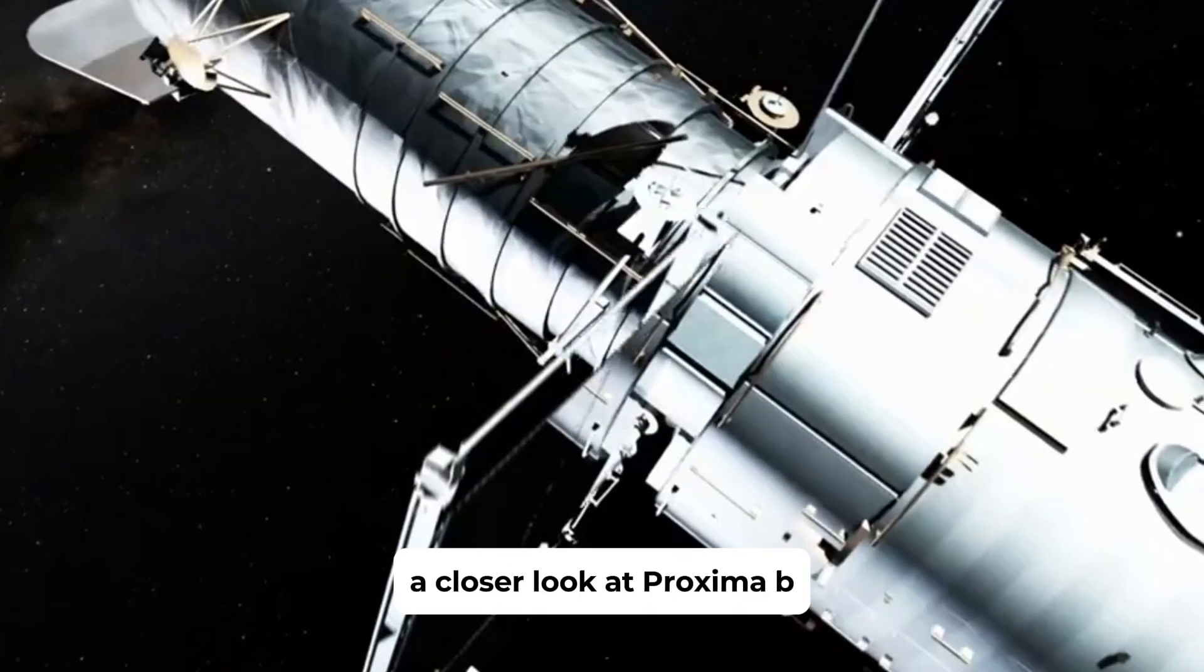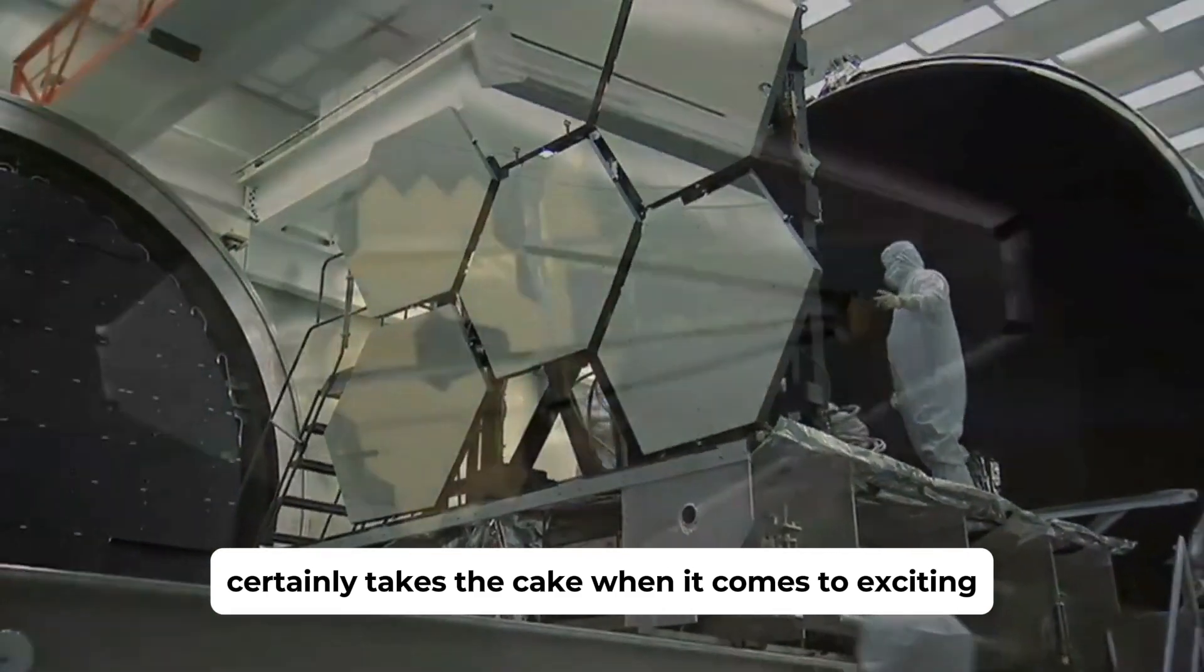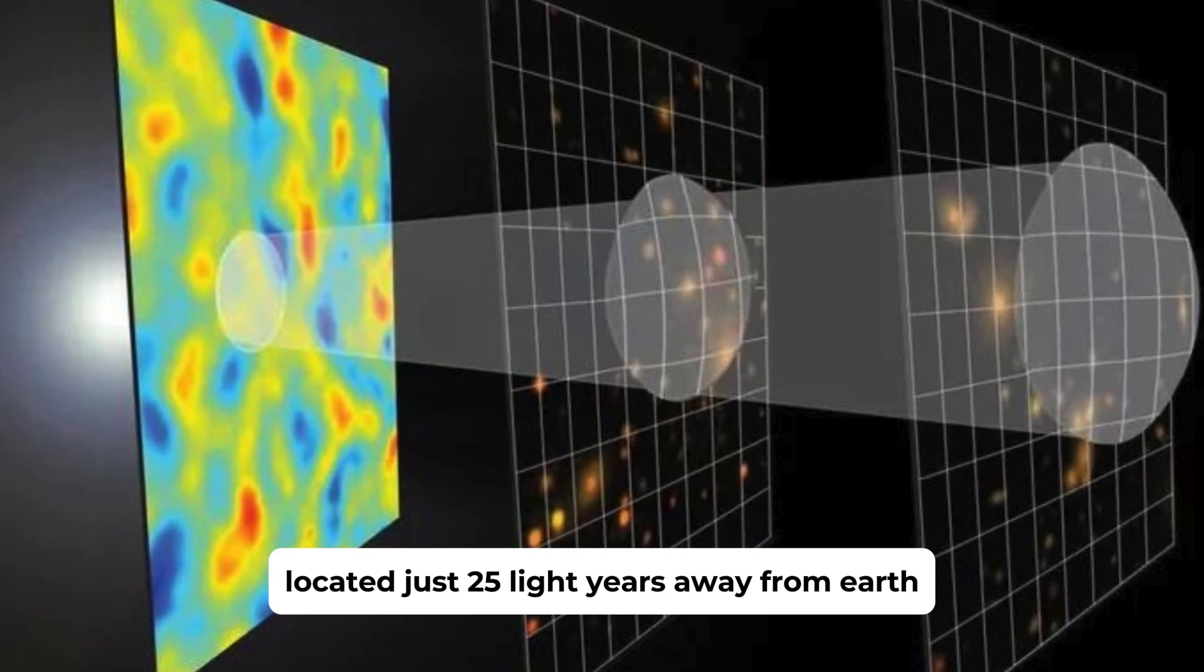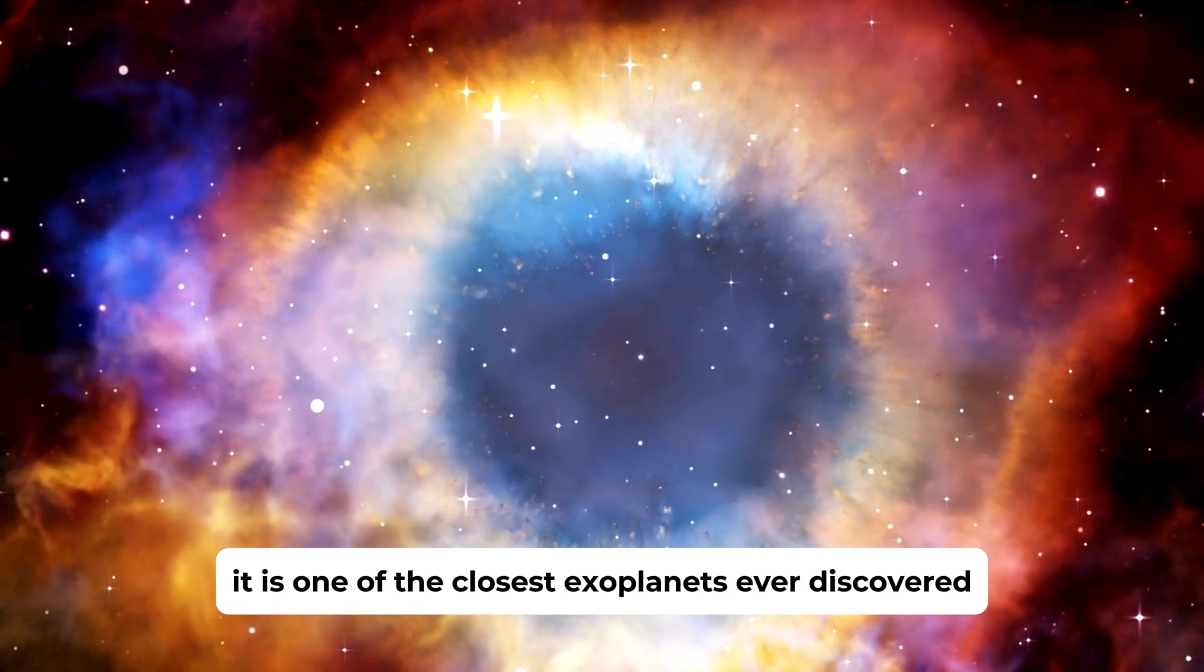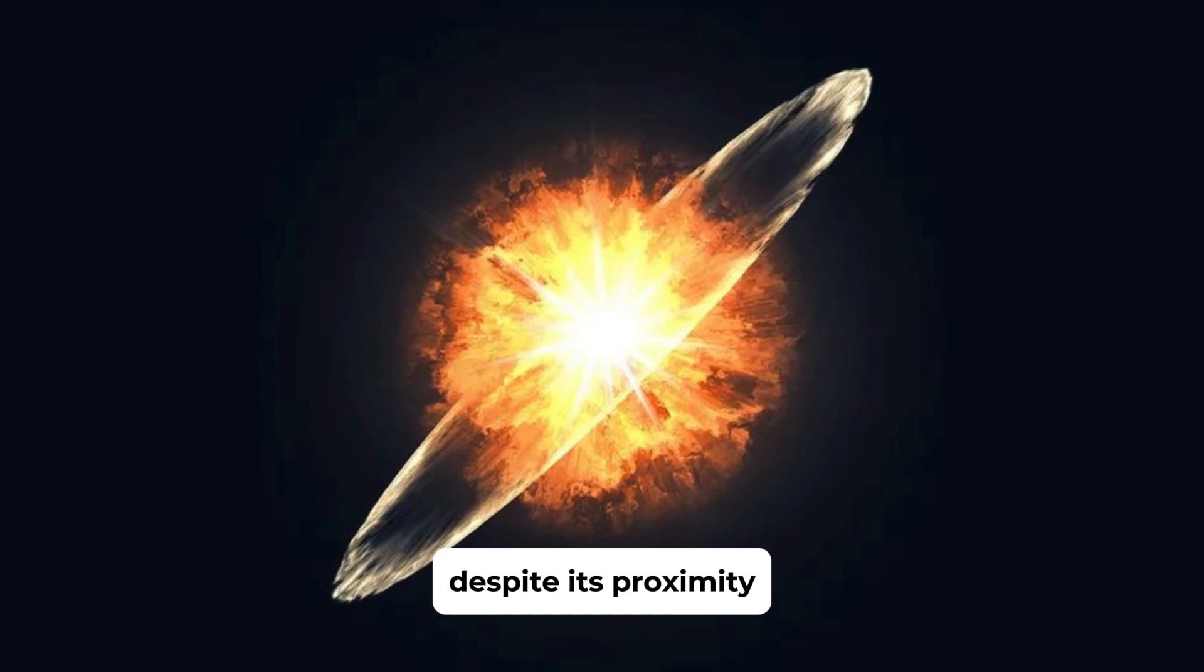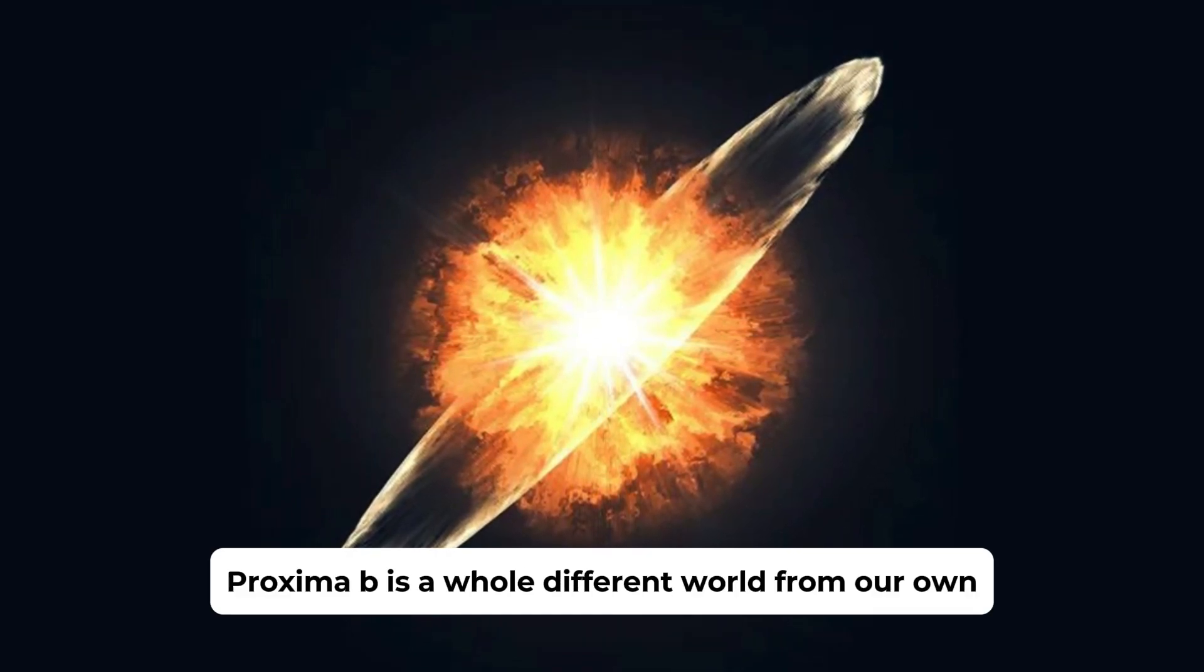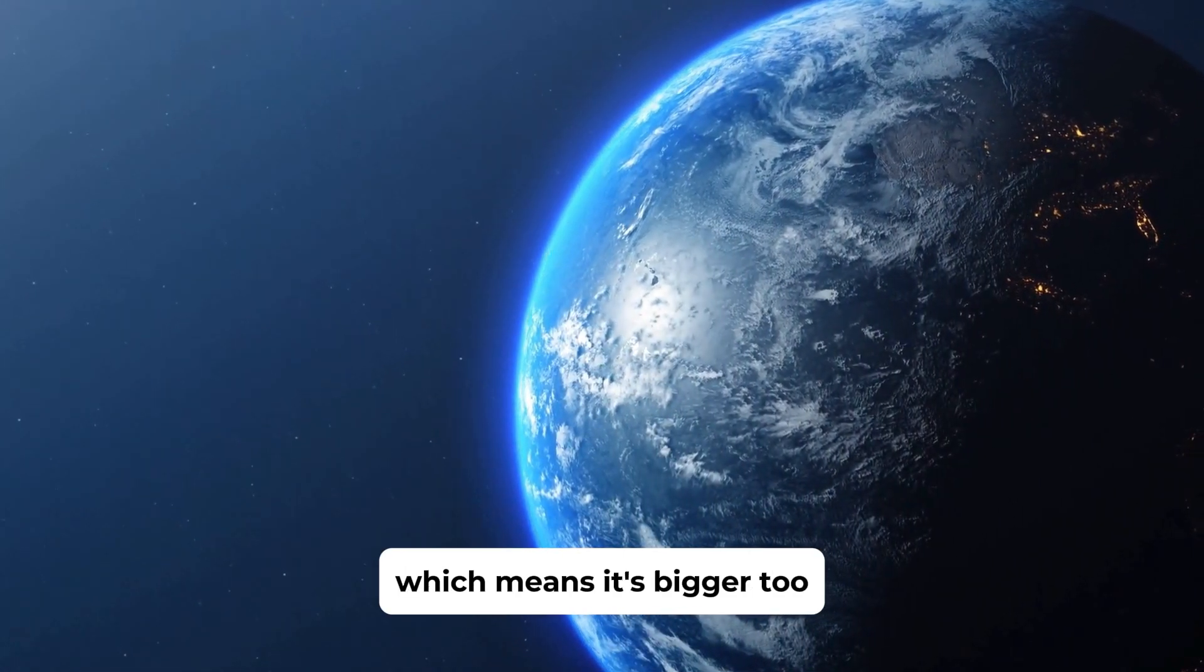A closer look at Proxima b. Proxima b certainly takes the cake when it comes to exciting astronomical discoveries. Located just 25 light-years away from Earth, it is one of the closest exoplanets ever discovered. Despite its proximity, Proxima b is a whole different world from our own. The planet is about 30% more massive than Earth, which means it's bigger too.